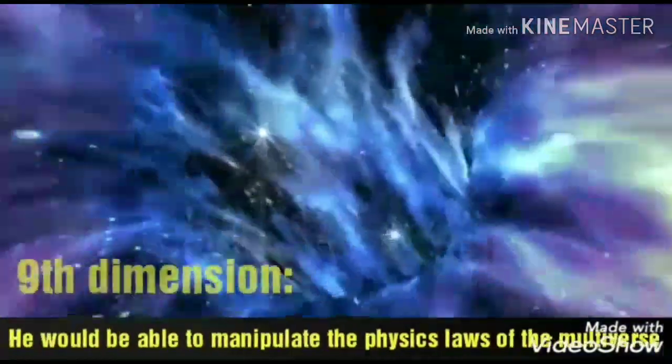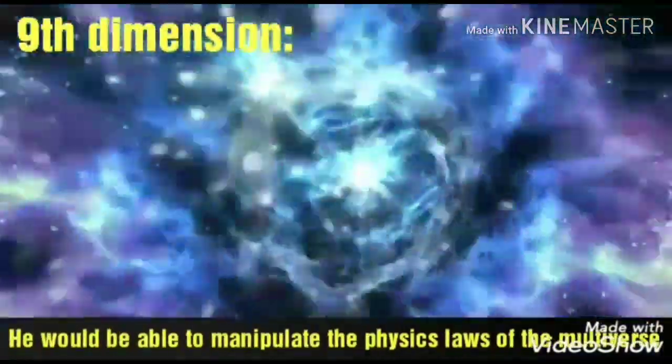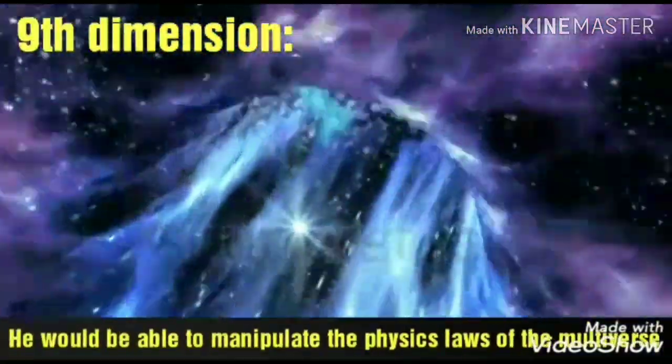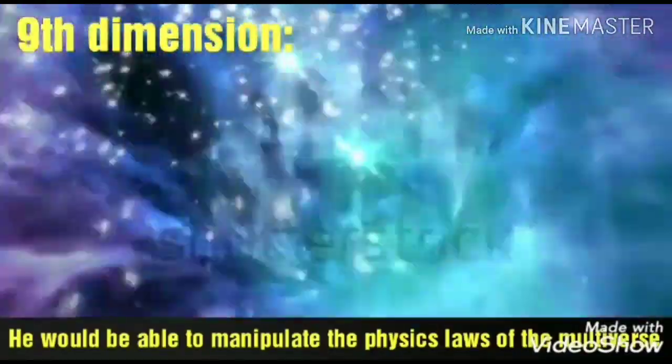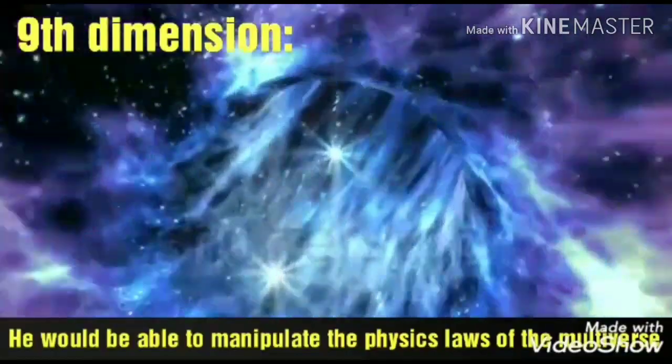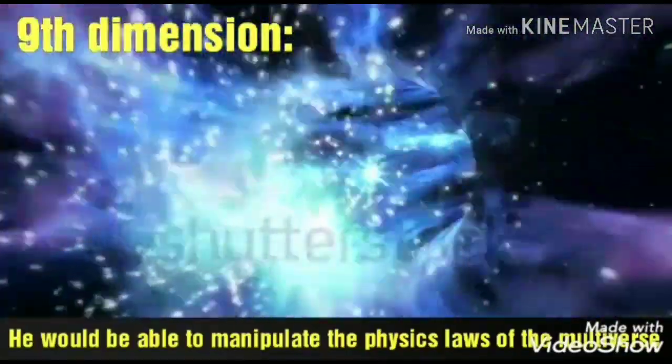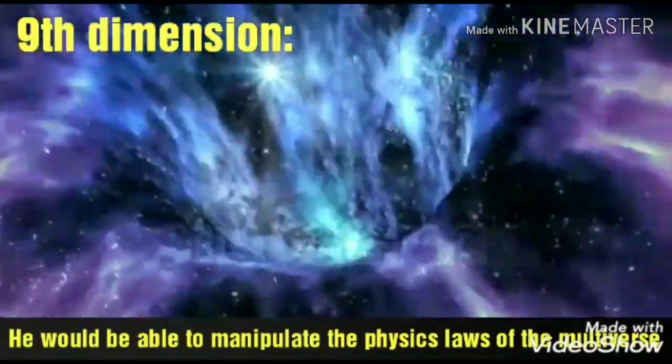Tenth, ninth dimension. It represents the entire history of the multiverse and has 512 mathematical points. A ninth dimensional being would be able to observe all the history and possible outcomes of the multiverse all at once. He will be able to manipulate all the outcomes and physical laws of the multiverse all at once.